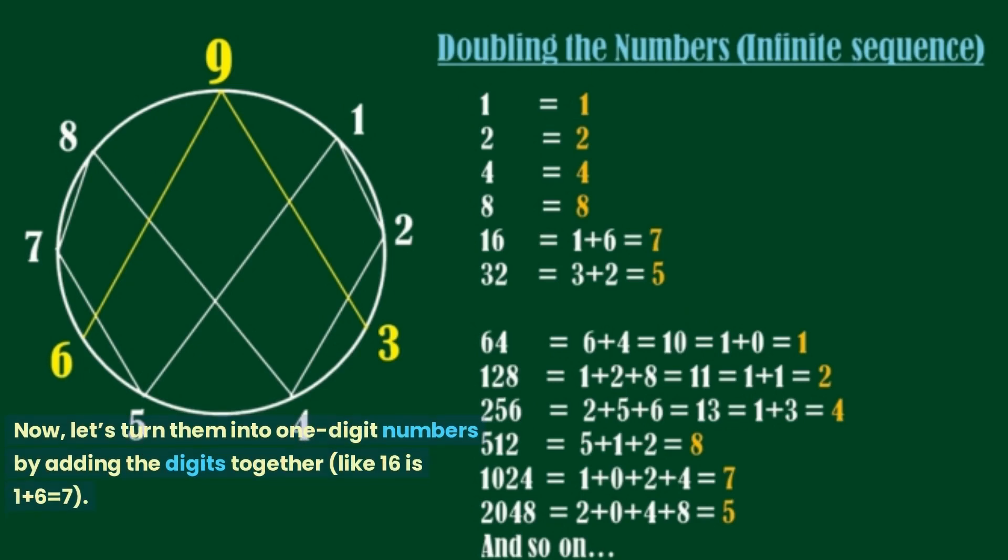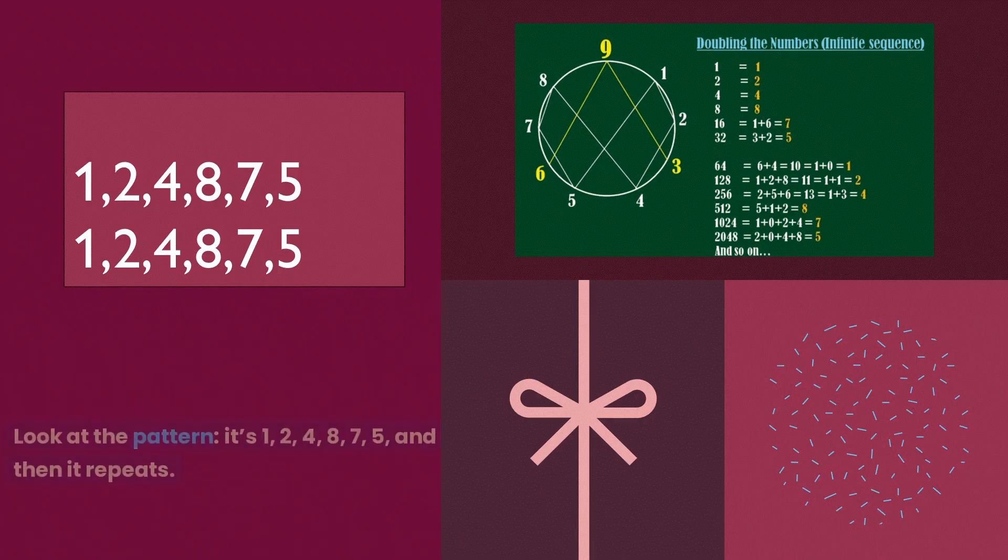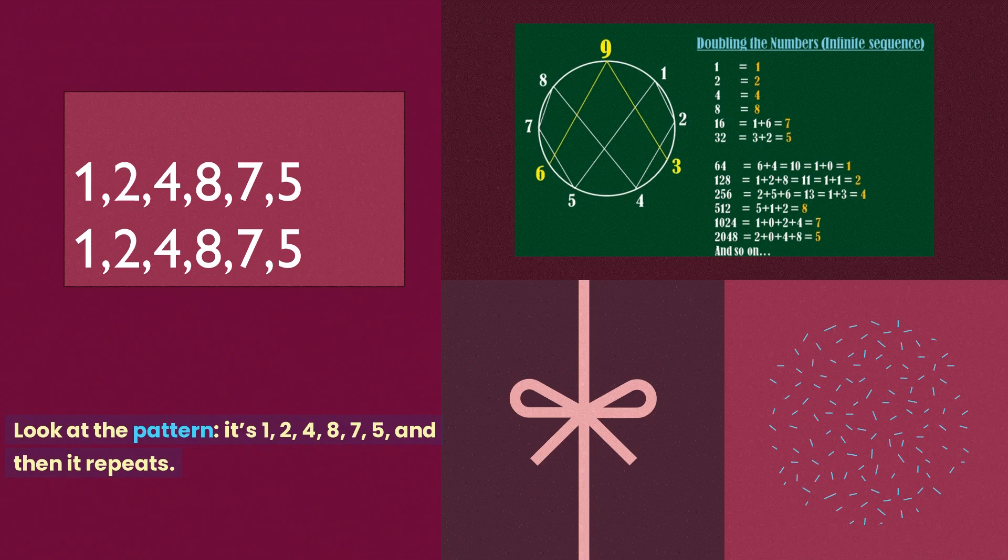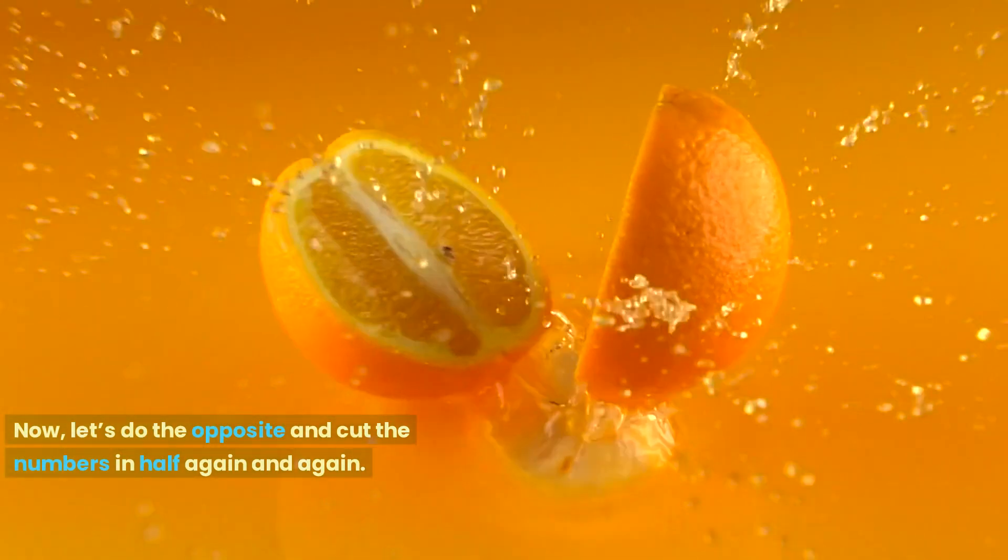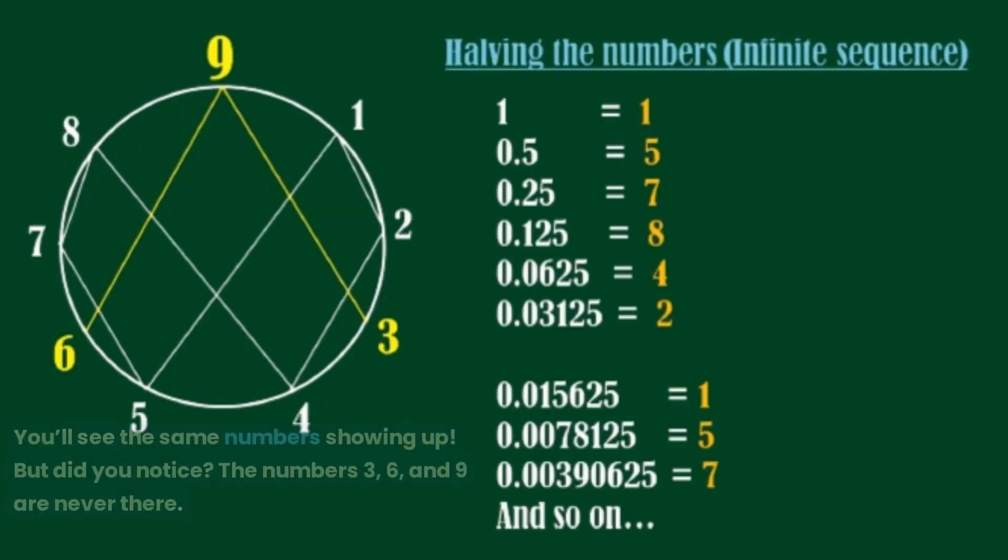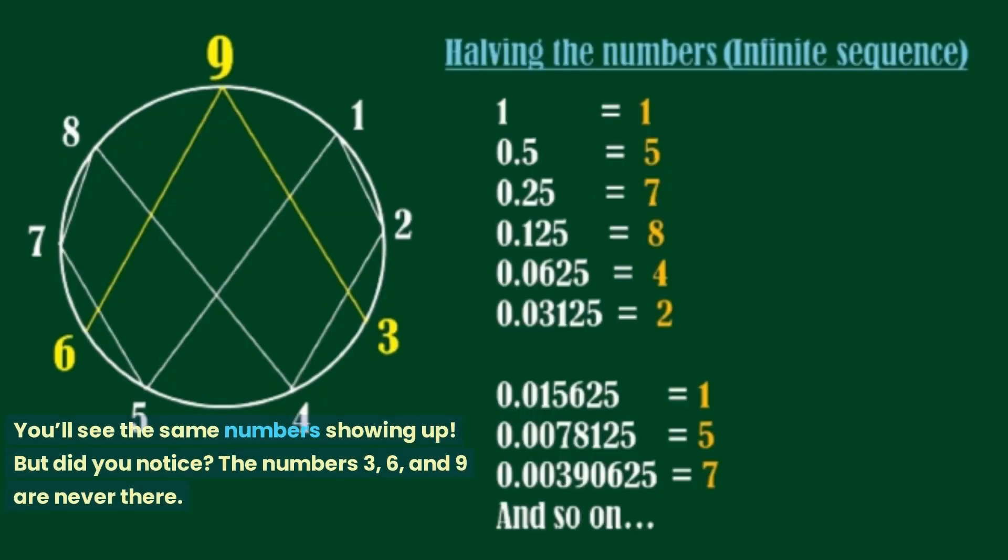Now, let's turn them into one-digit numbers by adding the digits together, like 16 is 1 plus 6 equals 7. Look at the pattern, it's 1, 2, 4, 8, 7, 5, and then it repeats. Now, let's do the opposite and cut the numbers in half again and again. You'll see the same numbers showing up. But did you notice? The numbers 3, 6, and 9 are never there. Why are they missing?